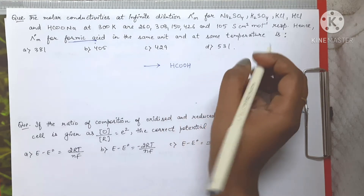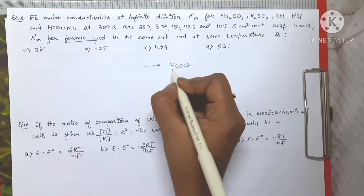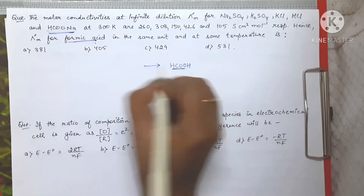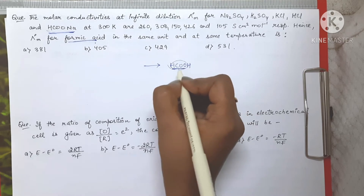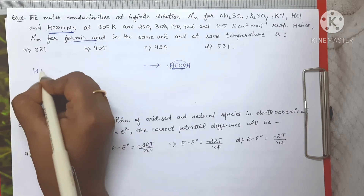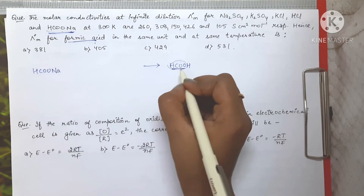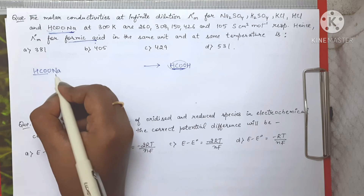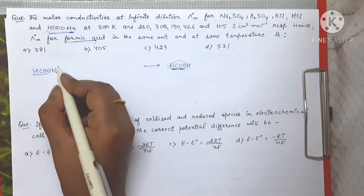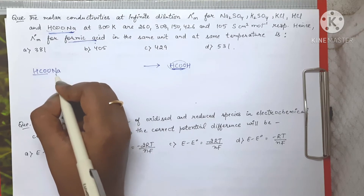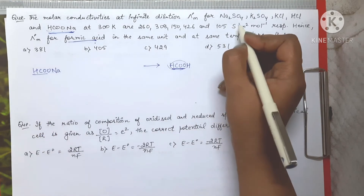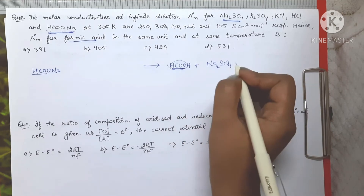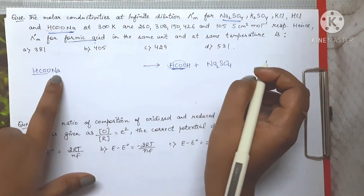Looking at what has been provided, we need the HCOO⁻ part. HCOONa can provide the HCOO⁻ part, so we write HCOONa on the left hand side so that HCOO is balanced on both sides. Now we look for a salt to balance Na on the left hand side — Na will be provided by Na₂SO₄. So we write Na₂SO₄ on the left hand side.